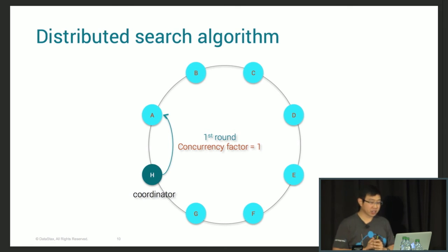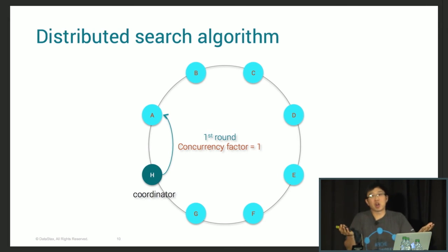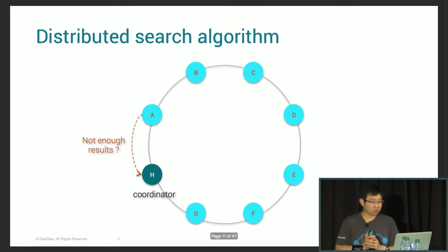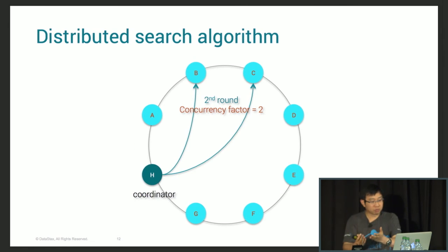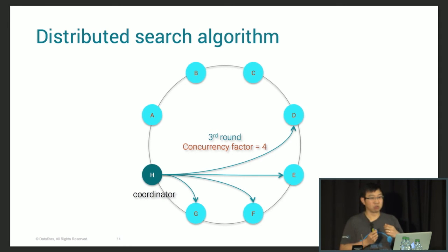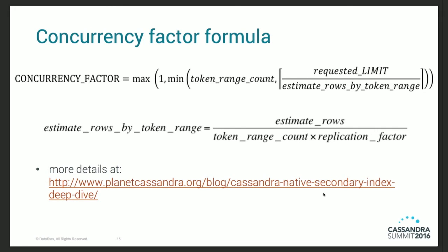When you query data using a secondary index, we use an algorithm to scan the cluster. The coordinator will issue a query with a concurrency factor — it will hit some nodes, not all of them. If it doesn't get enough results because you put a high limit, the coordinator will issue a second round by increasing the concurrency factor. If still not enough, it will increase the concurrency with a third round until it fetches enough data. There's a formula for the concurrency factor in the source code.